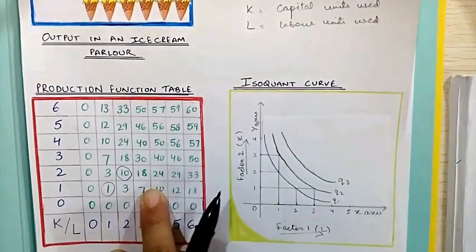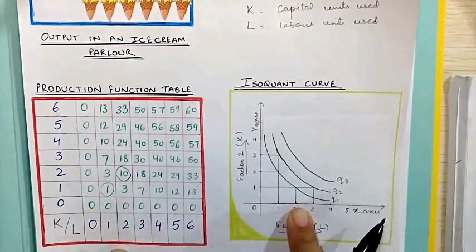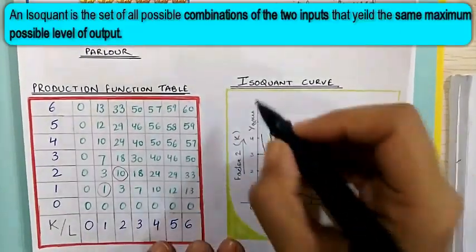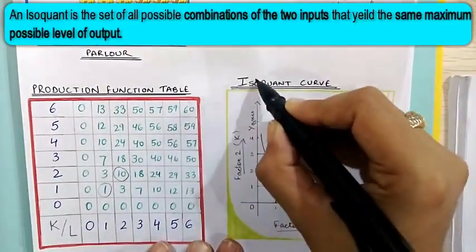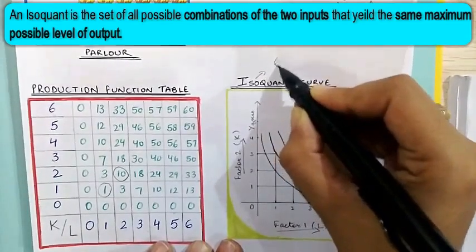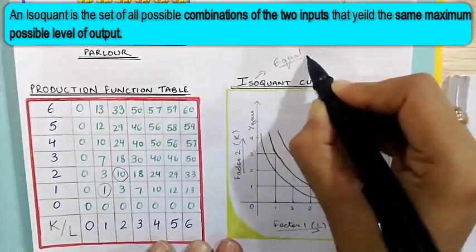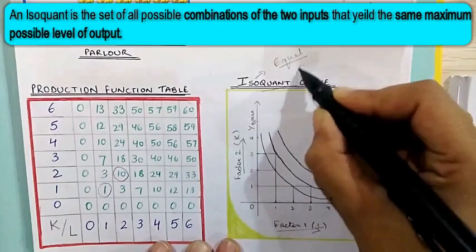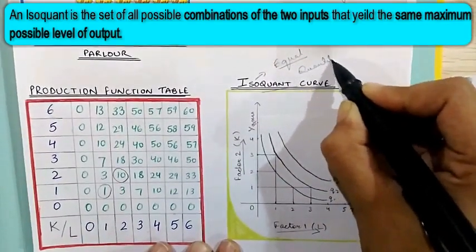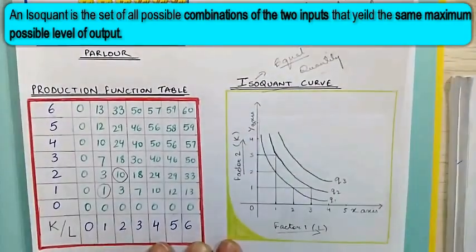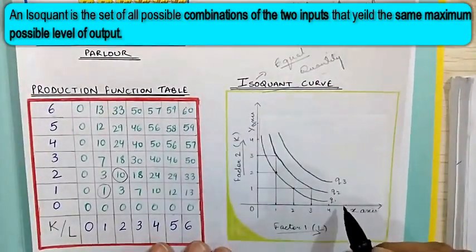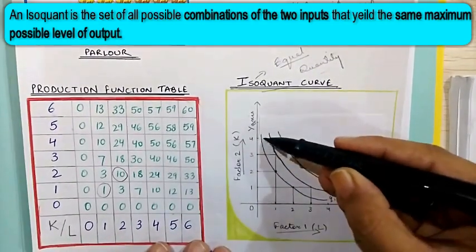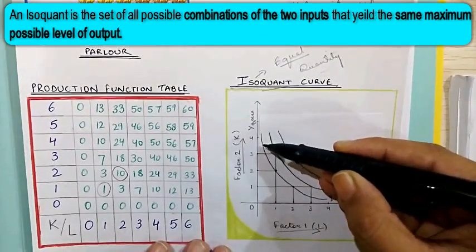This same thing can be presented on an isoquant curve. The word 'iso' means equal, and 'quant' is nothing but quantity. So an isoquant curve represents equal quantity.